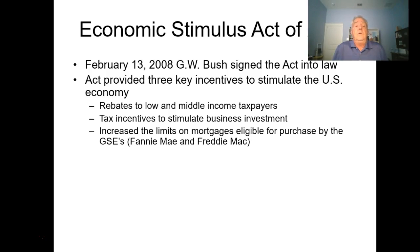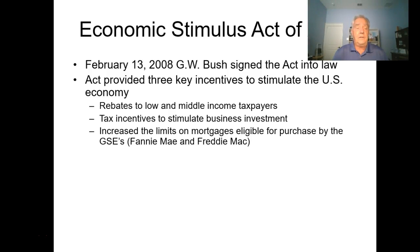The second incentive was business investment: if you invested $100,000 in your business, the government allowed you to write that entire amount off against income in the year you spent it—rather than depreciating it over five years at $20,000 per year. That was a huge benefit to businesses. The third element increased mortgage limits for Fannie Mae and Freddie Mac—viewed as a good thing at the time but which backfired in reality. Three elements comprised the Economic Stimulus Act of 2008.